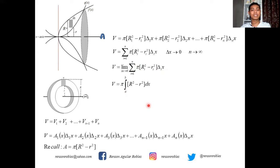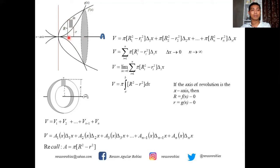If the axis of revolution is the x-axis, then the small radius r = g(x) − 0 = g(x), and the outer radius R = f(x) − 0 = f(x). Therefore, the volume is: V = π ∫[A to B] [f(x)² − g(x)²] dx.